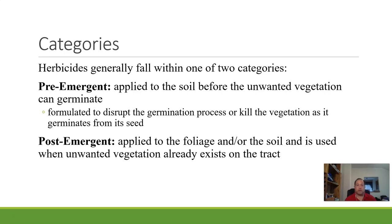Herbicides fall into two basic categories: pre-emergent and post-emergent. Pre-emergent is applied to the soil before the unwanted vegetation can germinate — the herbicide is formulated to disrupt the germination process or kill it as the plant germinates, preventing it from getting started. Post-emergent is applied to the foliage and/or soil when the unwanted vegetation already exists — it's already up and growing, and now we're trying to remove it.